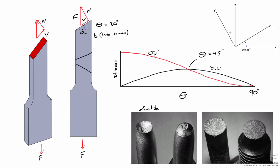This is a ductile material and this is a brittle material. The failure angle is about 45 degrees in all directions for the ductile material, showing some symmetry and the classic cup-and-cone fracture. Brittle materials fail at theta equals zero degrees because the normal stress is maximized there, so we see a fracture going straight across. For ductile materials we tend to see failure at about a 45-degree angle.